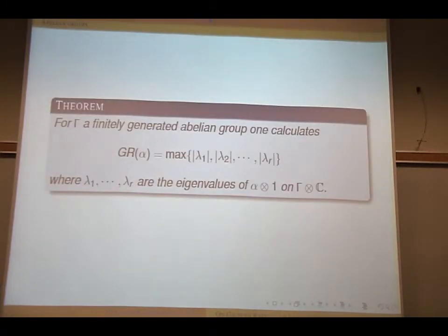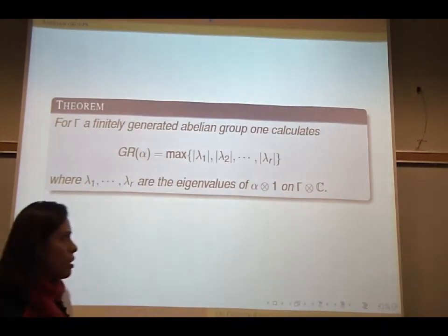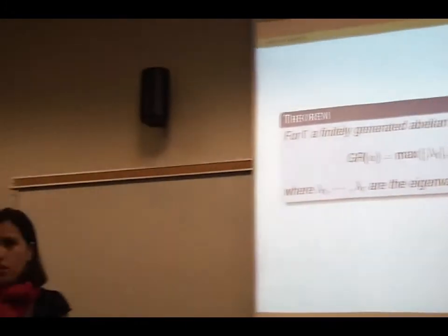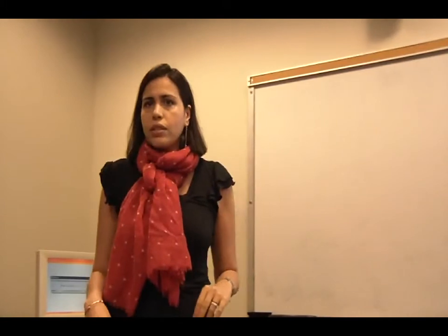What you could conclude in general if you do some computation, you can see if you have a finitely generated abelian group, you can calculate the growth rate to be the maximum absolute value of the eigenvalues of alpha tensor 1 on gamma tensor C. So this is a way to actually calculate it.